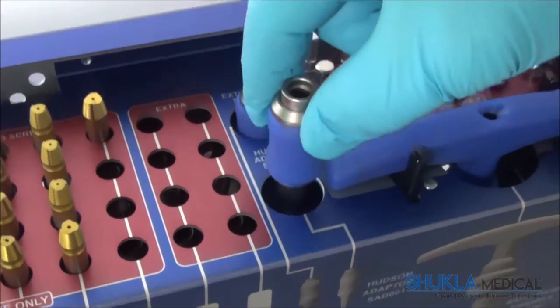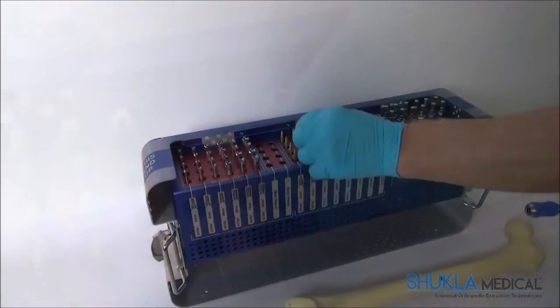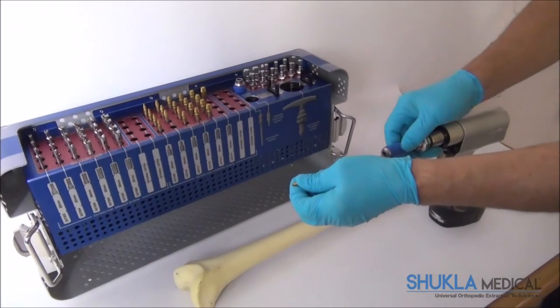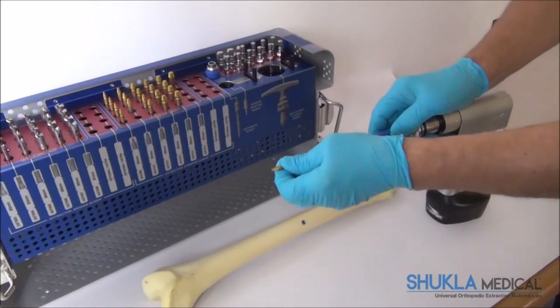Like the broken screw extractors, the stripped screw extractors may be used under power, utilizing the Hudson Extractor Interface, or by hand, utilizing the T-Handle.